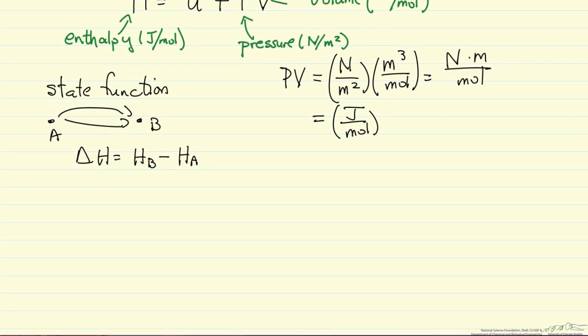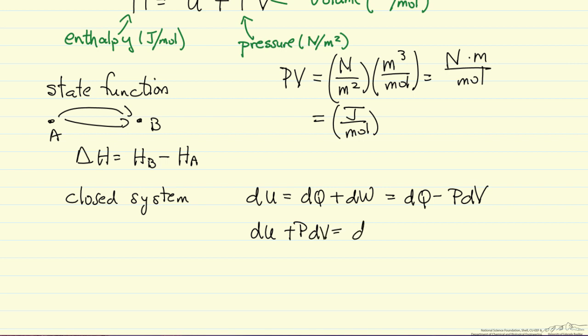To see how enthalpy might arise in applying the first law, let's look at the first law for a closed system where no mass is added or removed. We'll look at a reversible system. If it's reversible, I can write dW as the pressure of my system times dV. Rearranging the first law: dU + PdV = dQ.